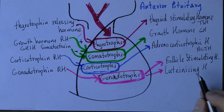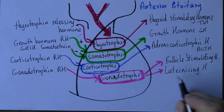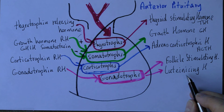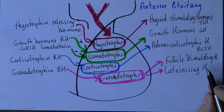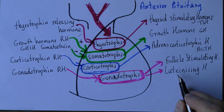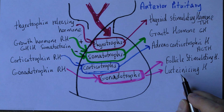The luteinizing hormone — 'luteinizing' means yellowing, as it changes the colour of the follicle in the ovary. The luteinizing hormone also stimulates ovulation, the actual process of the release of the ovum from the ovary, and regulates the levels of progesterone in the second half of the menstrual cycle. In men, the luteinizing hormone stimulates the cells in the testes that produce testosterone.